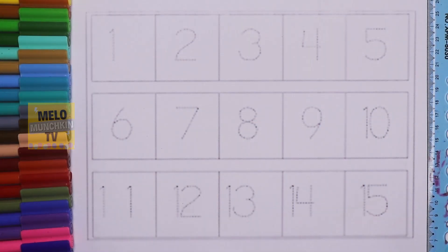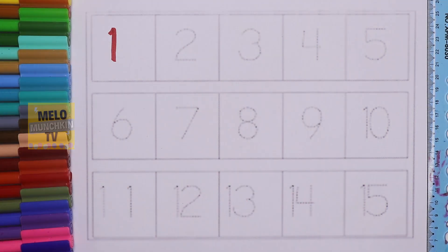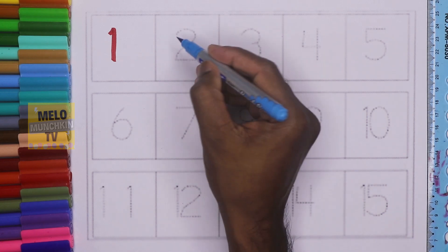Hello kids, today in this video we will learn numbers and the number names from 1 to 15. So without much ado, let's get started. Red color, this is number one: O-N-E, 1. Blue color, this is number